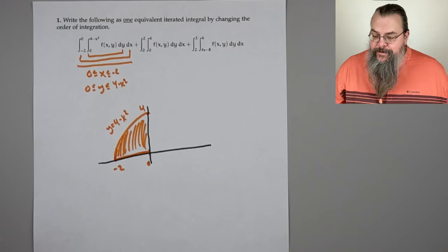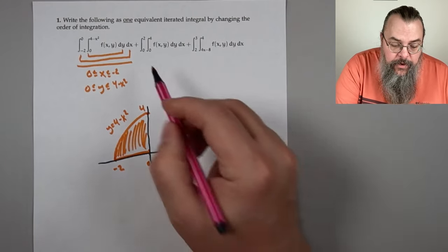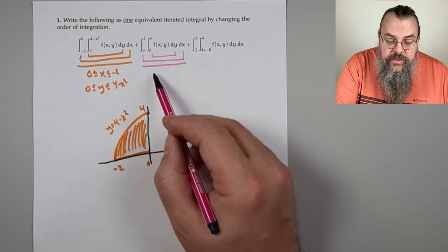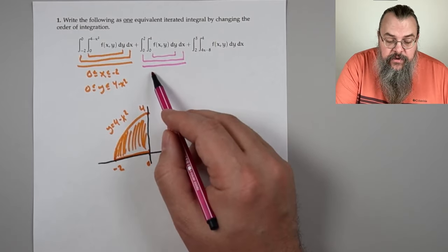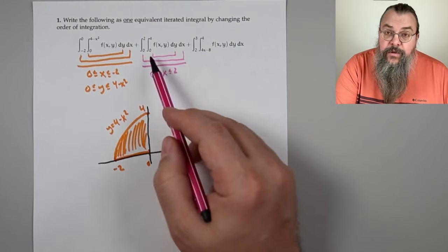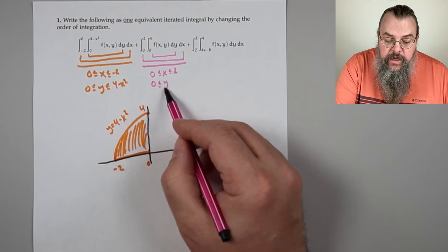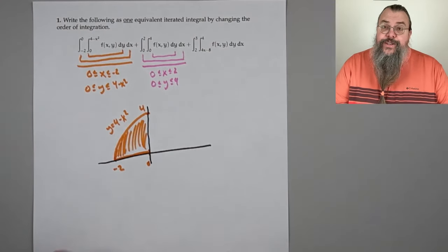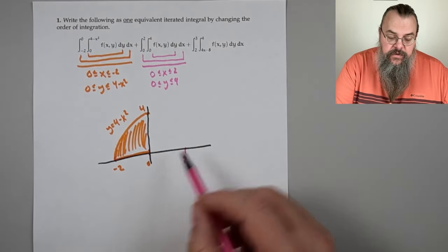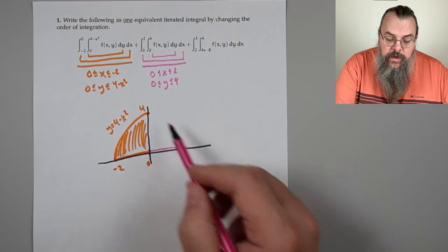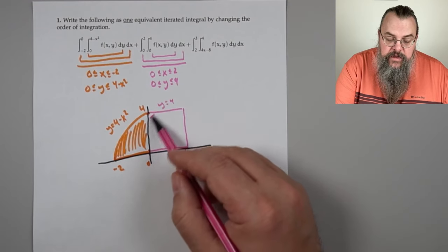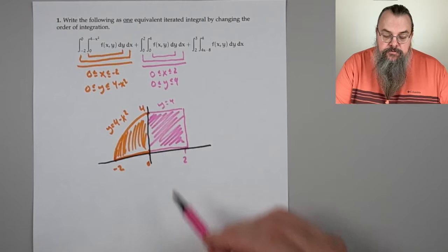Now let's go to our second integral. The outside layer is x, so 0 ≤ x ≤ 2. The inside is the y layer: 0 ≤ y ≤ 4. That's actually going to make a rectangle — from 0 up to 2 for x and from 0 up to 4 for y. That's the middle integral.